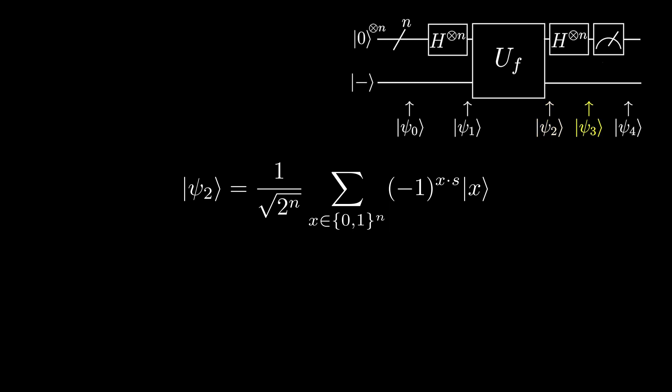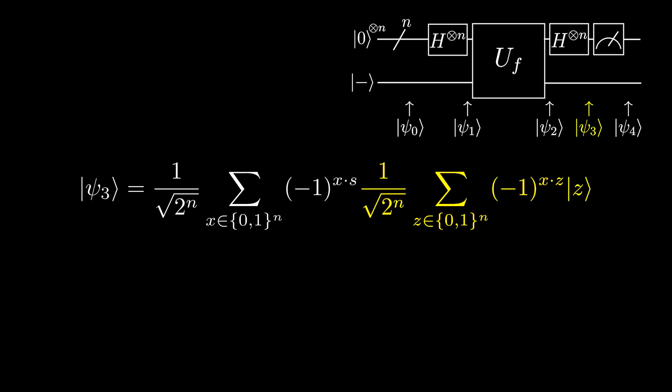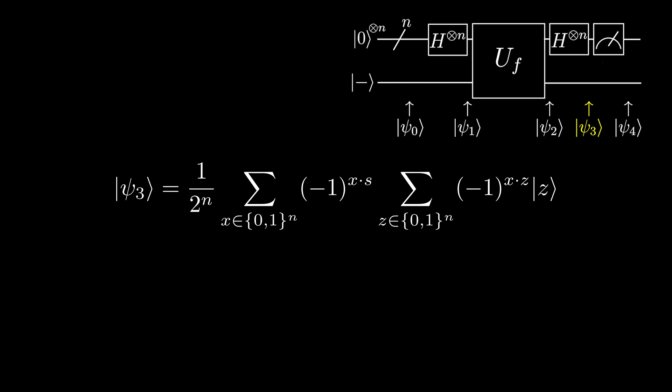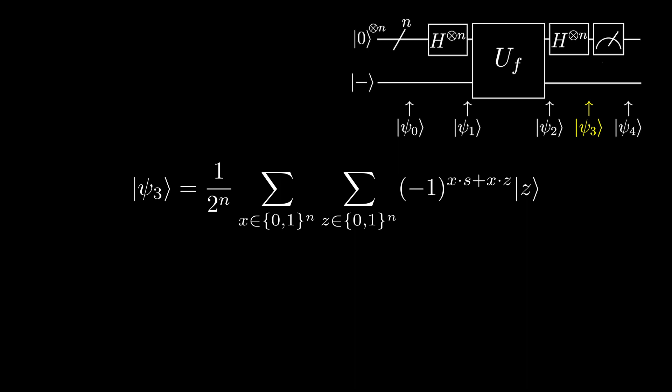Now we apply a Hadamard to each of our qubits. Let's distribute the negative 1 to the power of x dot s into the sum. We can now add the exponents, giving us the dot product of s and x plus the dot product of x and z. We can factor out the x, giving us s plus z dotted with x.